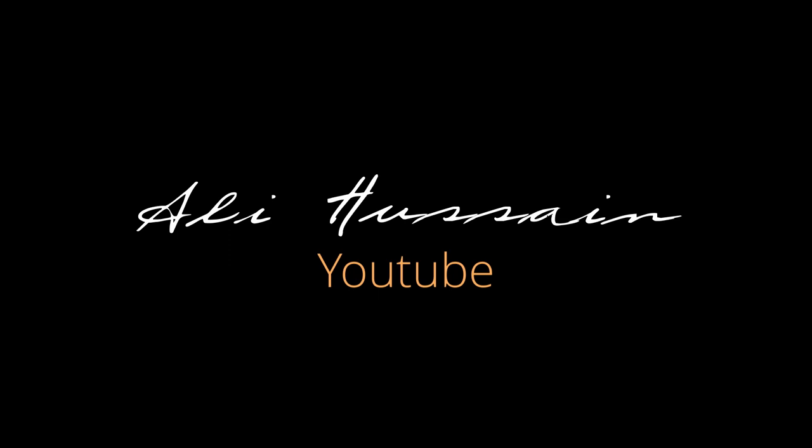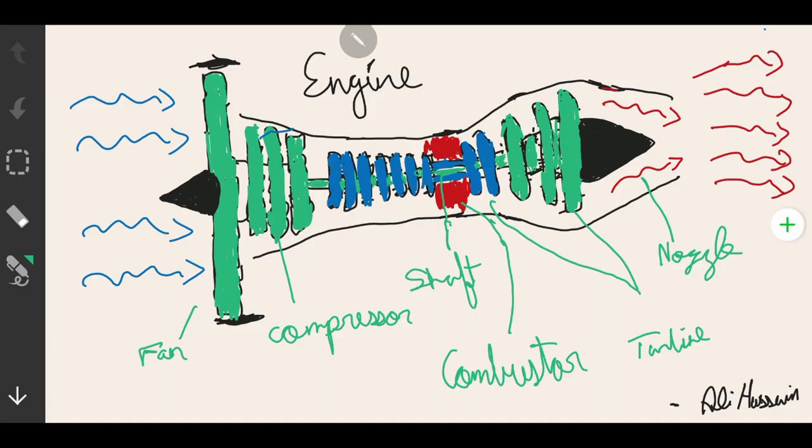As you can see, there are six main components of the engine: fan, compressor, shaft, combustor, turbine, and nozzle. The fan is the first component and consists of large spinning blades, usually made of titanium.